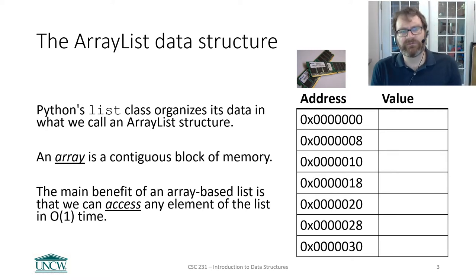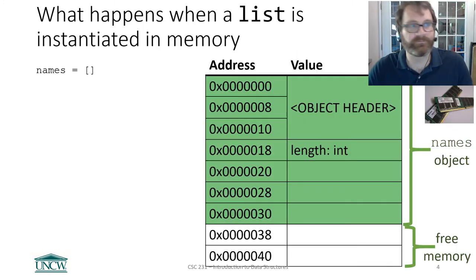Arrays are really powerful and they've been around since the earliest days of computing. The main benefit of using an array-based list is that we can access any element of the list in constant time, in Big O of one time. That is why Python's list and list indexing is really fast. It doesn't matter if you've got a billion items in your list. It takes the same time to find any item.